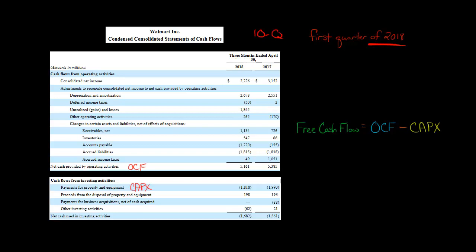And so we're going to take this number right here, 5,161. And remember, this is not $5,000. The amounts are in millions. So this is actually $5.161 billion of operating cash flow.